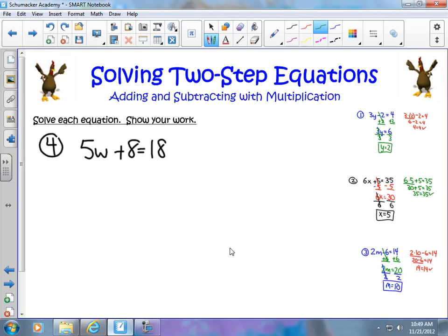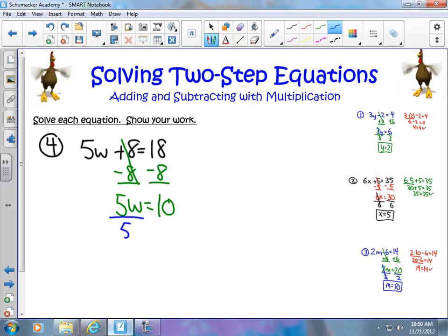Subtracting 8. These cancel out, and I end up getting 5w equals 10. And now I can go ahead and divide to get rid of my multiplication. I'm going to divide by 5. Divide by 5. These cancel out. I get w equals 2.